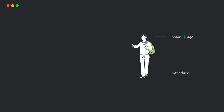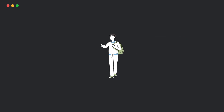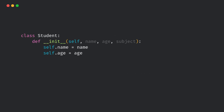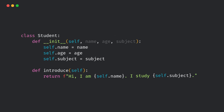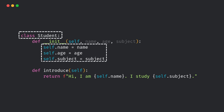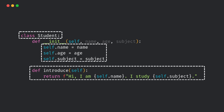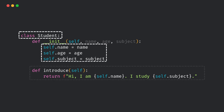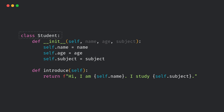Let's take a real world example. Suppose you're a student, so let's define a student class in Python. What are we doing here? We're just designing a student. This class defines what every student will have and what every student can do. But this class is just a blueprint — no actual student exists yet.